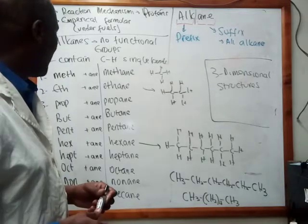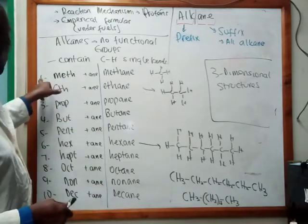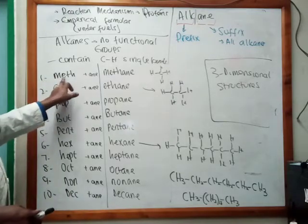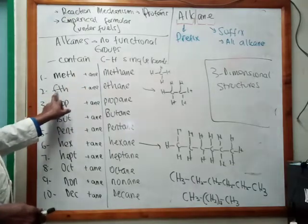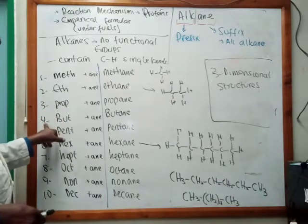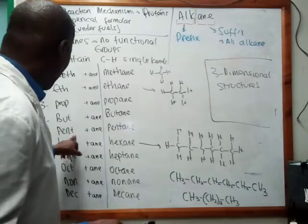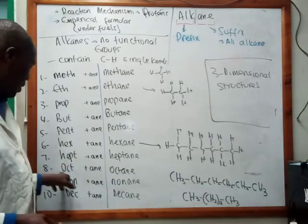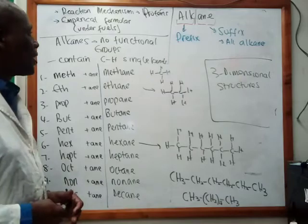Some of these letters — the prefixes — you may have heard of them. If the hydrocarbon has one carbon atom, the prefix is 'meth' (M-E-T-H). Two carbon atoms: 'eth'. Three carbon atoms: 'prop'. Four carbon atoms: 'but'. Five carbon atoms: 'pent' — familiar words. Six carbon atoms: 'hex'. Seven carbon atoms: 'hept'. Eight carbon atoms: 'oct'.